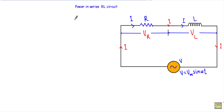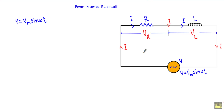In this video, I will show you the average power absorbed in a RL series circuit. I have a resistor R here which is in series with an inductor whose inductance is L, and I am applying an alternating voltage V equal to Vm sin(ωt) in this RL series circuit. The applied voltage V equals Vm sin(ωt), as this is an inductive circuit.